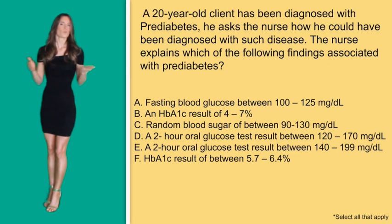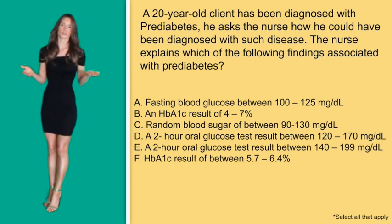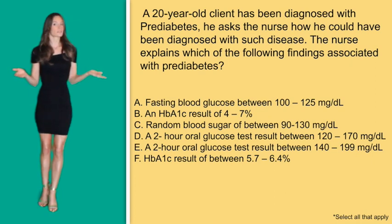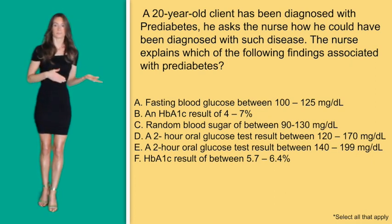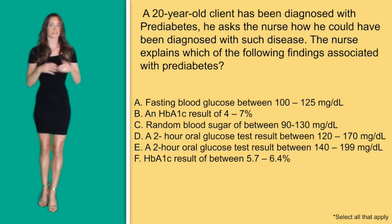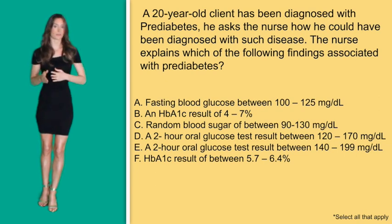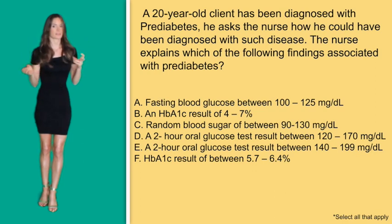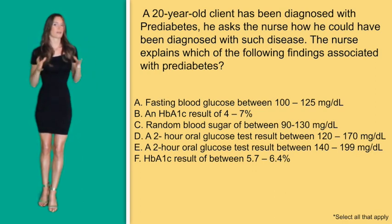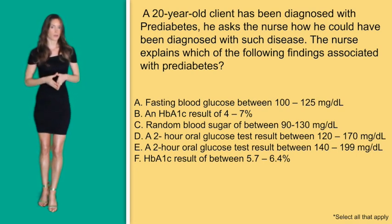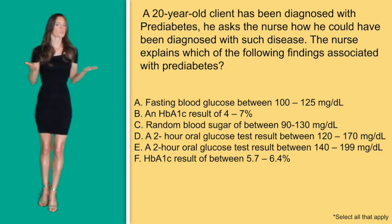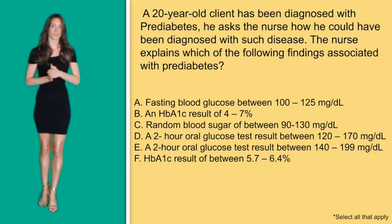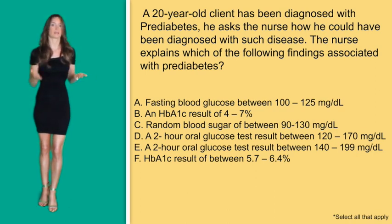This question is in the select-all-that-apply style, which is super challenging, especially when you're running on low sleep that nursing school induces. Let's look at the answer options one by one. Option A: a fasting glucose level between 100 and 125. It doesn't tell us exactly how long the patient has been fasting, but fasting usually means overnight or at least four to five hours. After this time, the blood sugar should be relatively low, between 70 and 110.